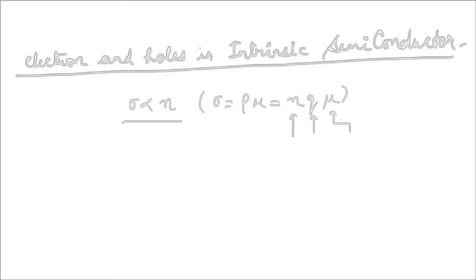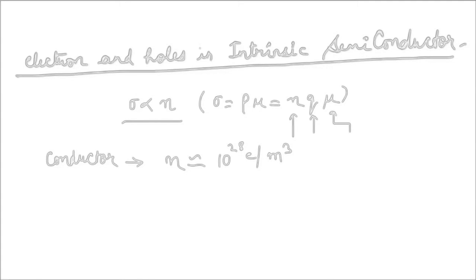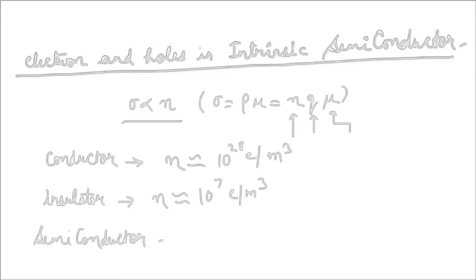For a good conductor, n is approximately 10 to the power 28 electrons per meter cube, which is very large. For an insulator, n is approximately 10 to the power 7 electrons per meter cube, which is relatively very small. For a semiconductor, the value of n lies between these two values.